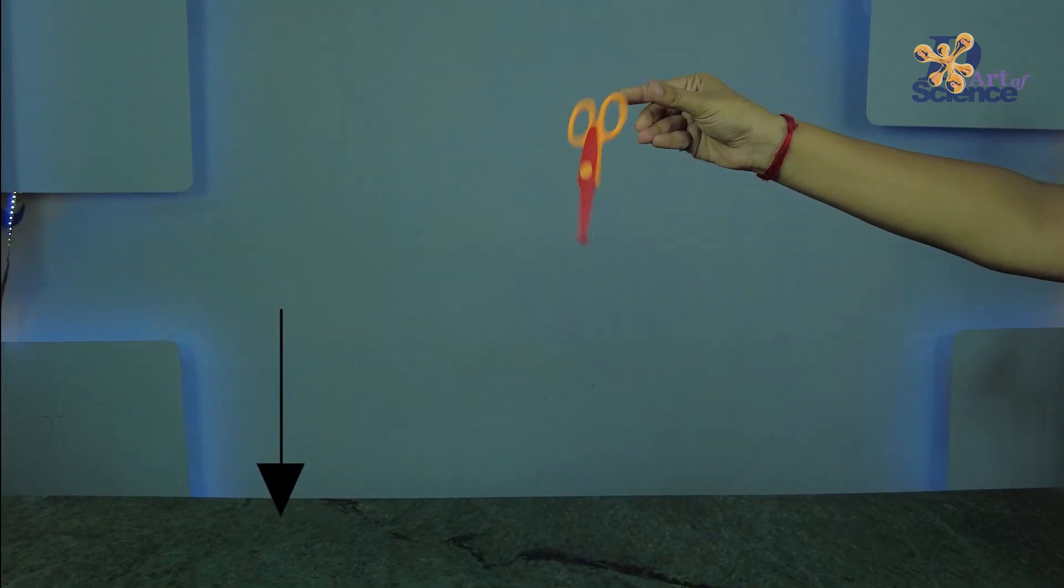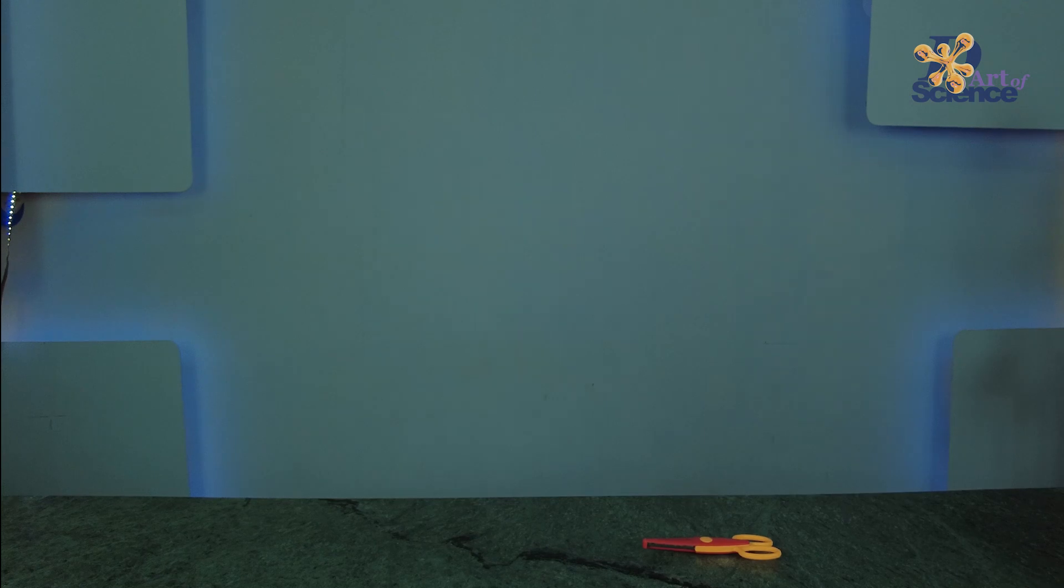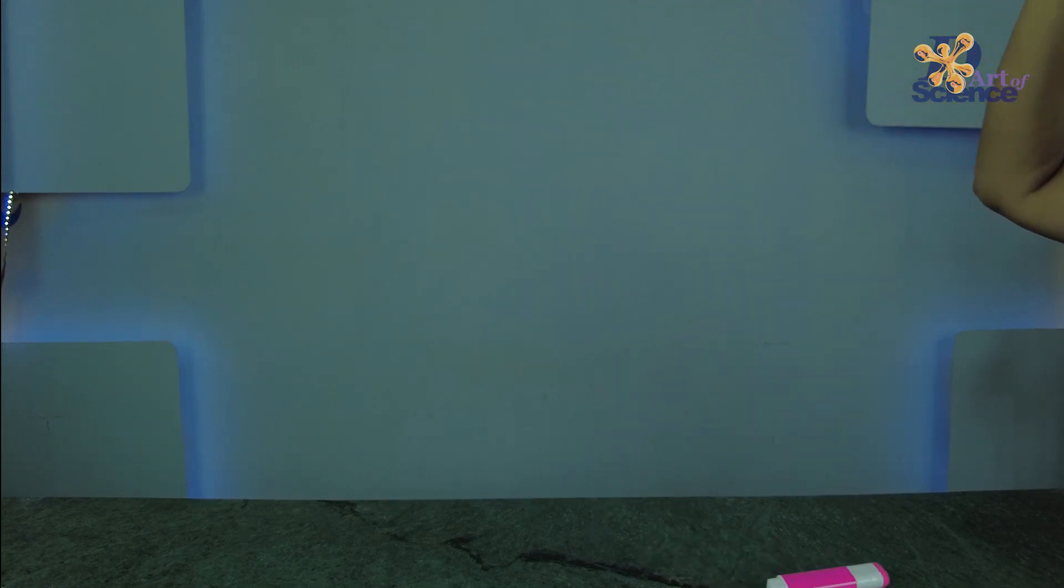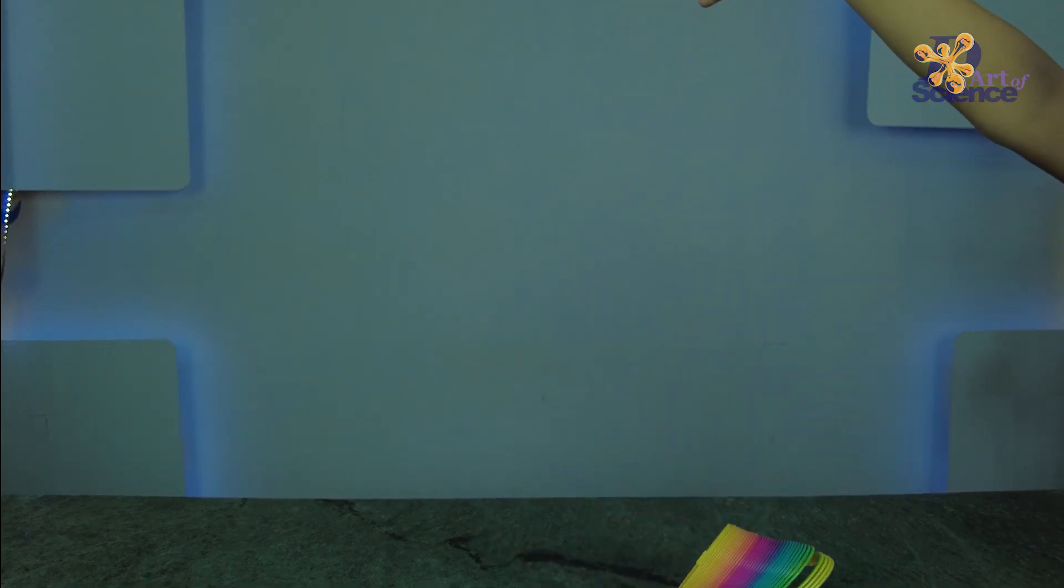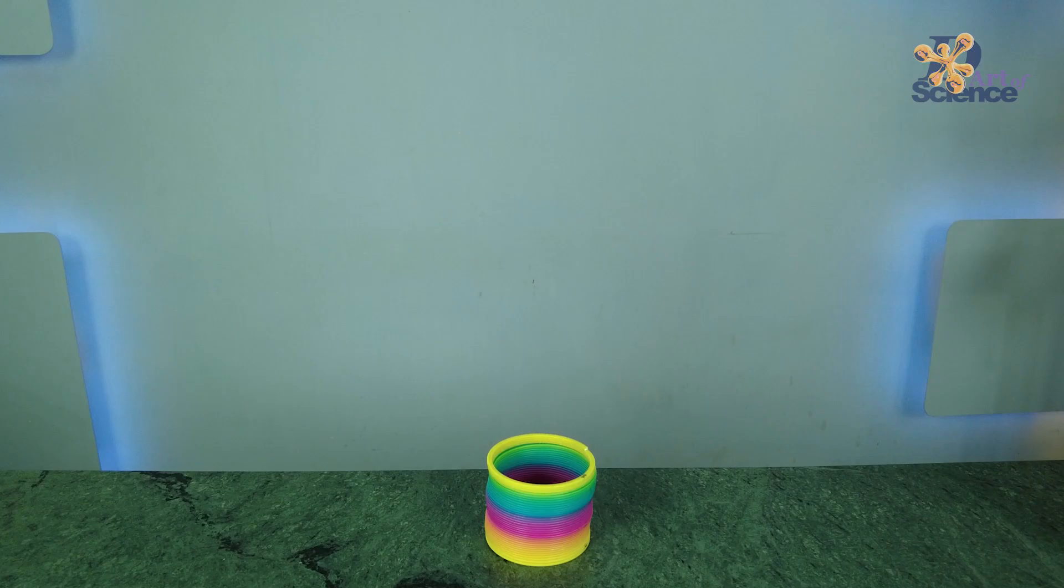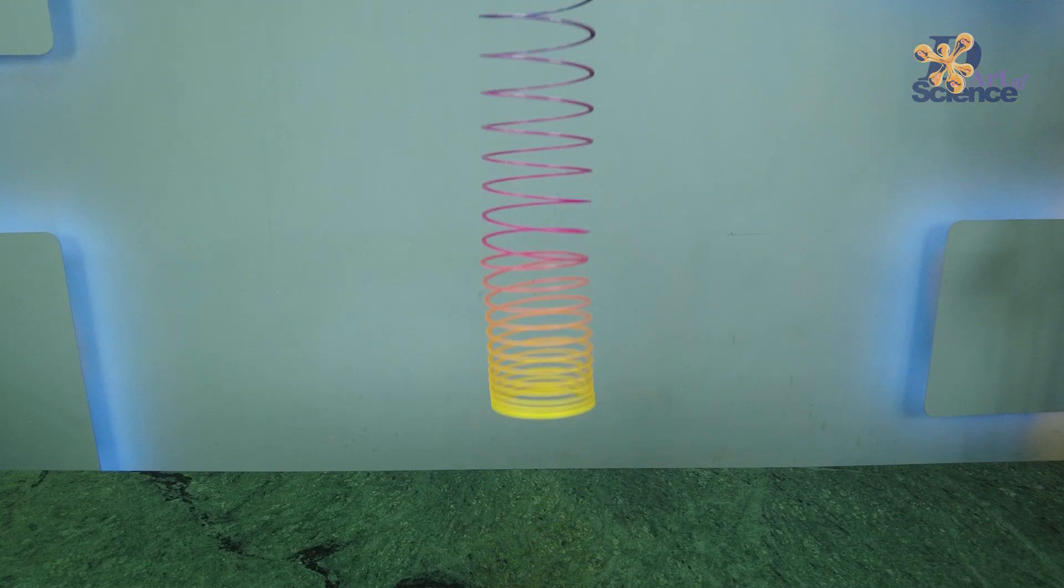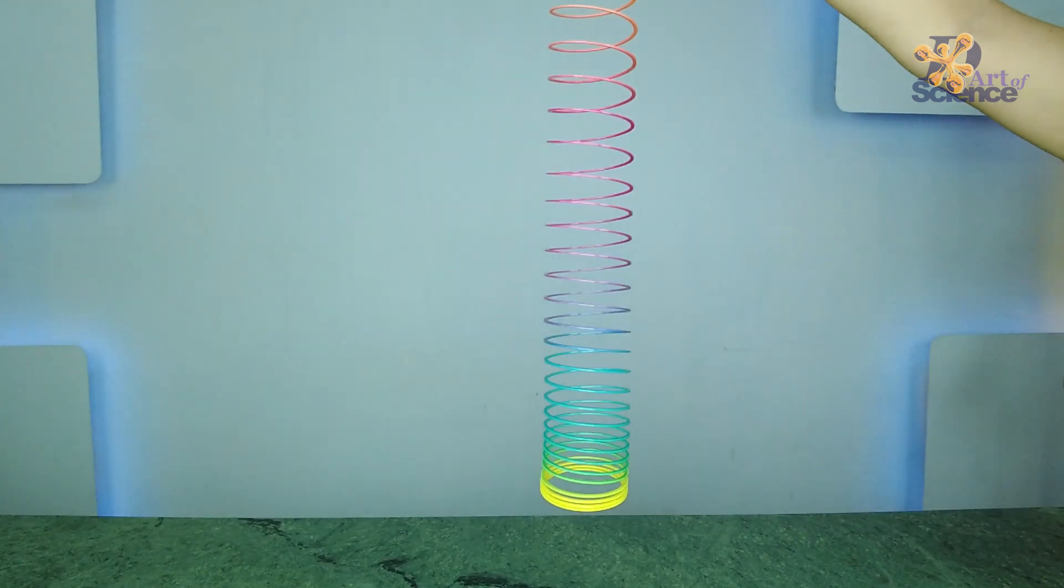All these objects fall down directly due to gravity and so does the slinky in its original state. But if I just hold the top of the slinky and then drop it down, the bottom does not move until the top catches up with it.